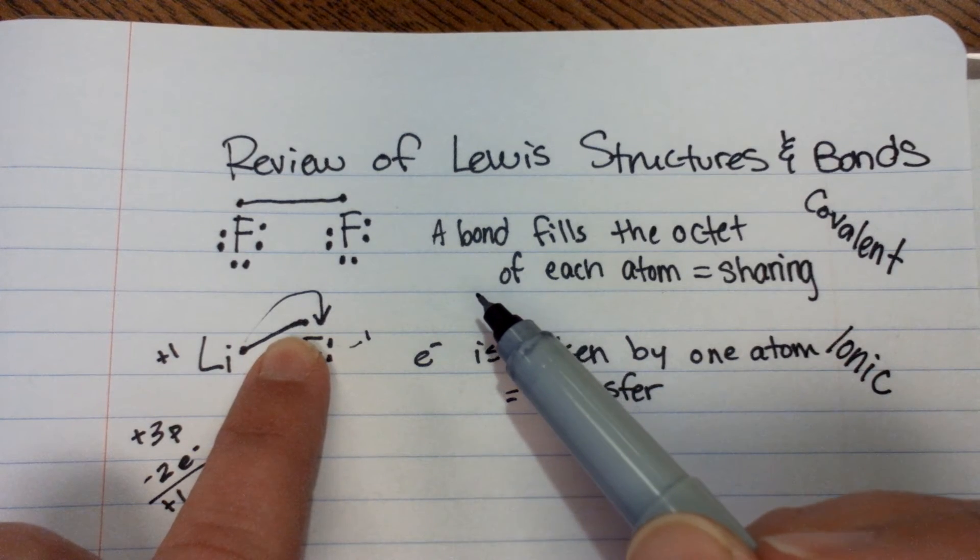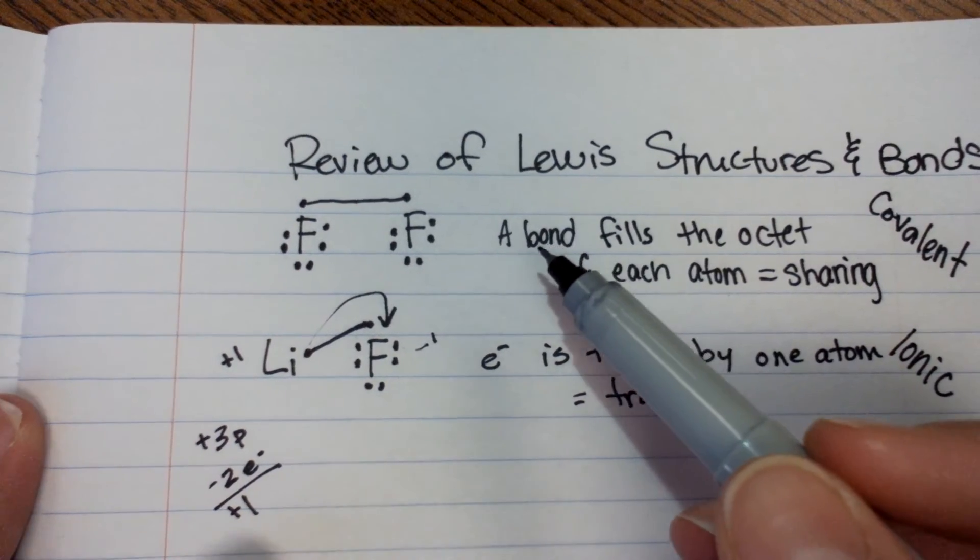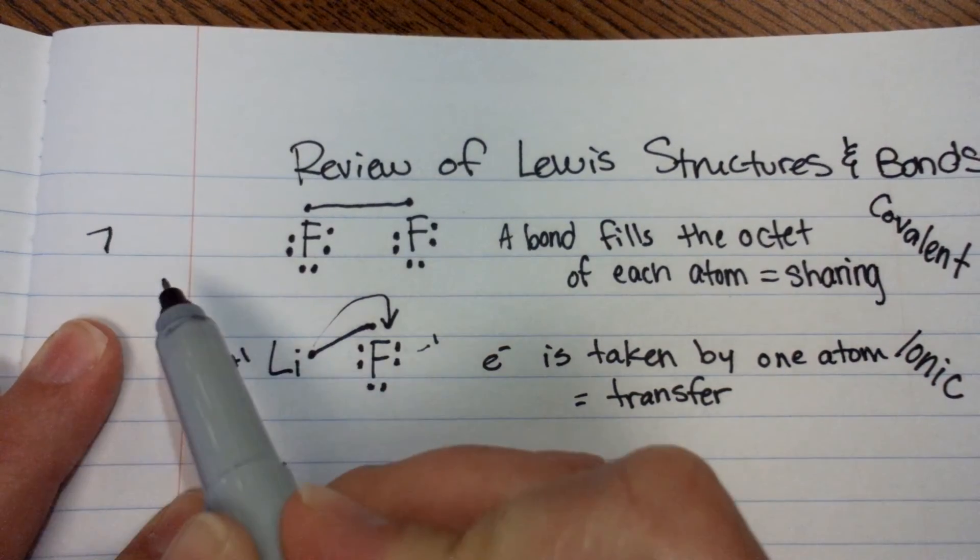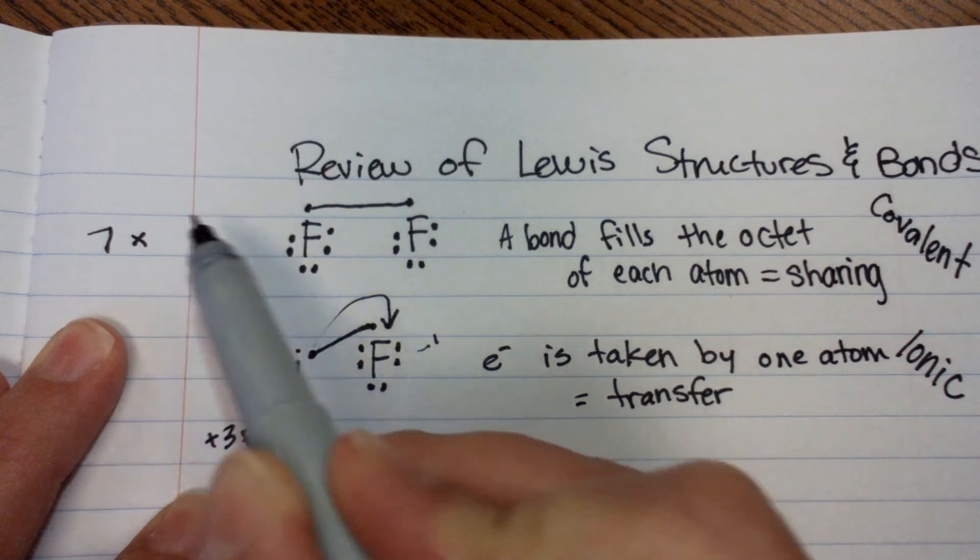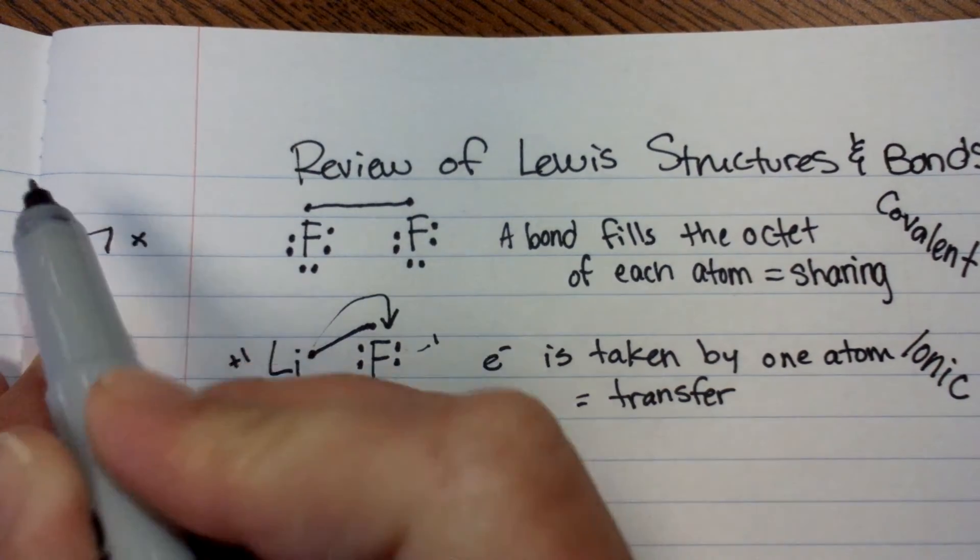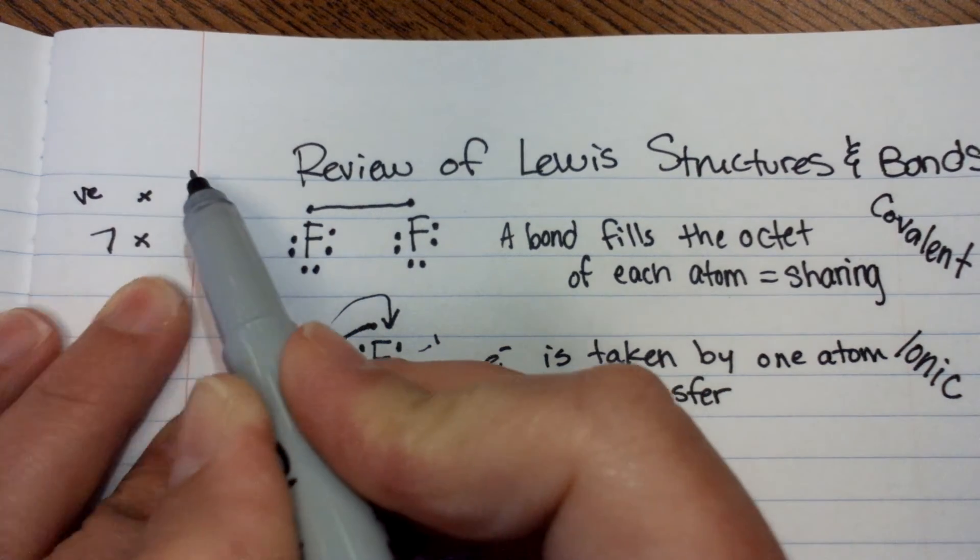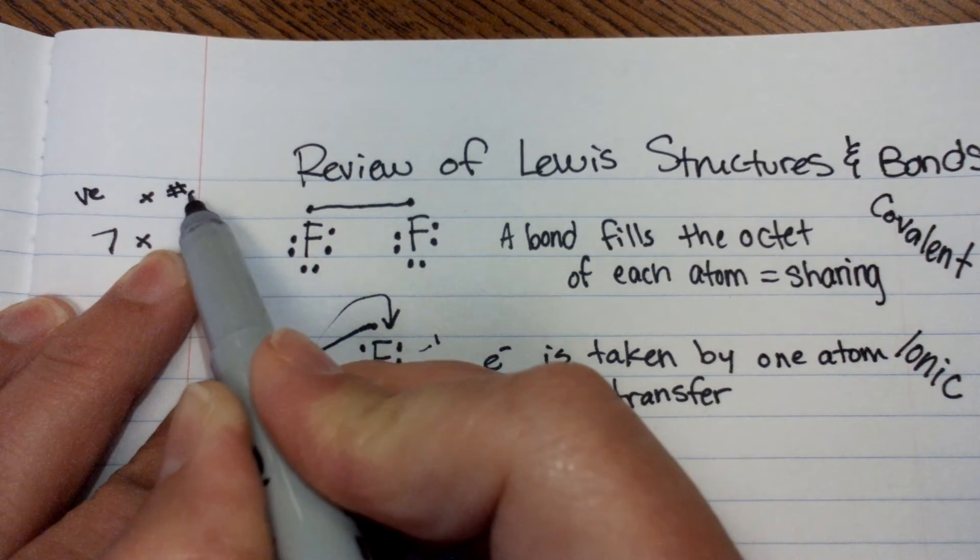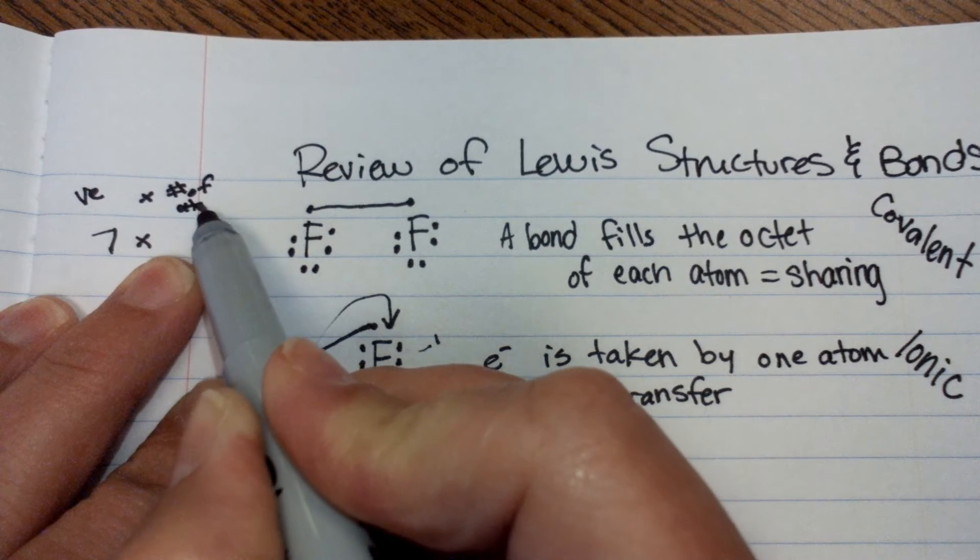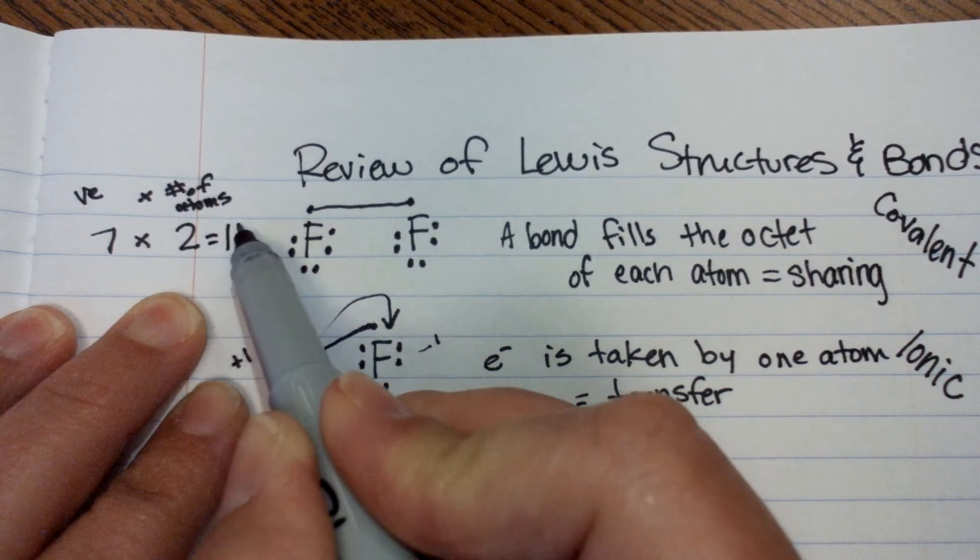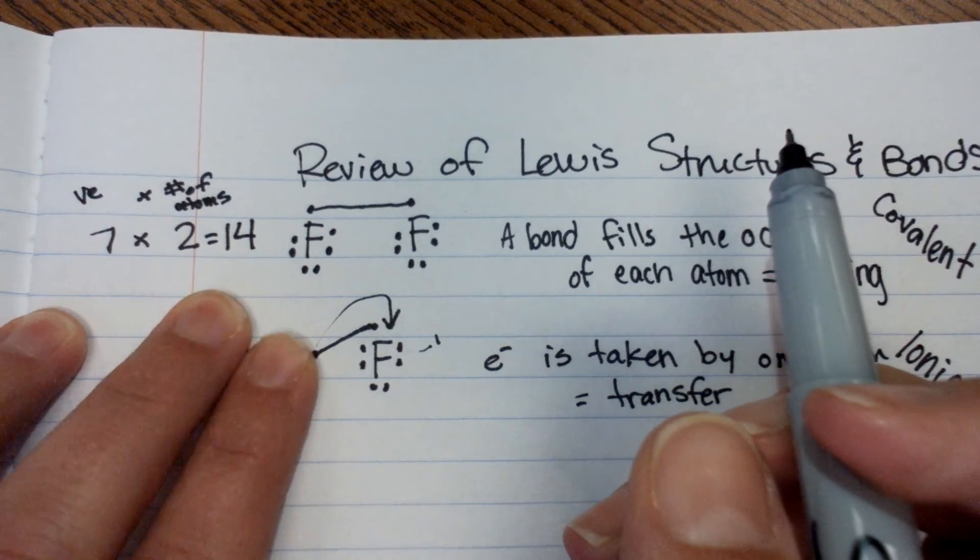Or, we could do a little math. Okay? So, we know that there is 7 for each fluorine atom. There's 2 fluorine atoms. So, valence electrons times number of atoms. So, we had 2 fluorine atoms equals 14 total valence electrons.